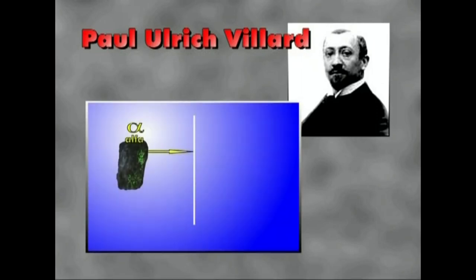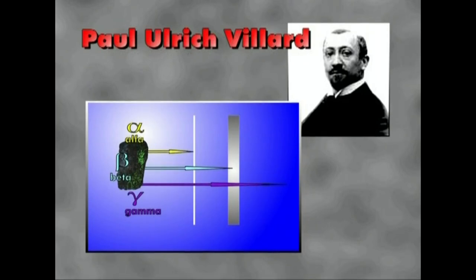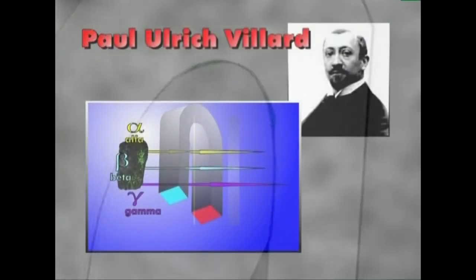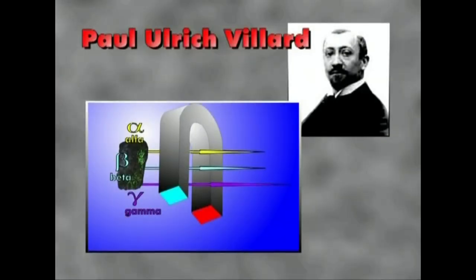Urte bete geroago, Villard frantzesak elementu erradioaktiboen erradiazioan hirugarren erradiazio mota bat ere bazegoela aurkitu zuen. Besteak baino askoz ere sarkorrago zen eta eremu magnetikoak ez zuen dezbideratzen. Kargarik gabea zen, beraz. Gama izpiak eman zioten izena.